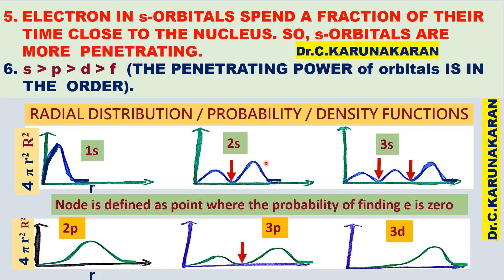There are two peaks. The larger peak represents the maximum probability of finding the electron. This is the maximum probability of finding the electron at distance r. The maximum probability of finding the electron is farther away from the nucleus for higher orbitals.